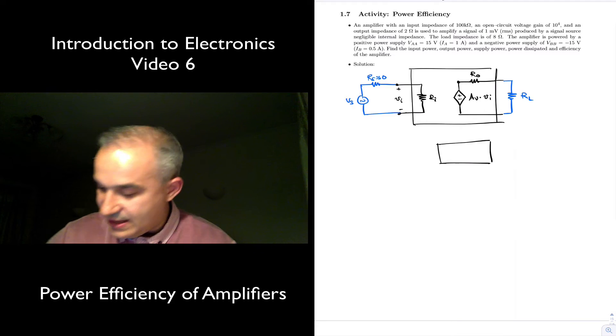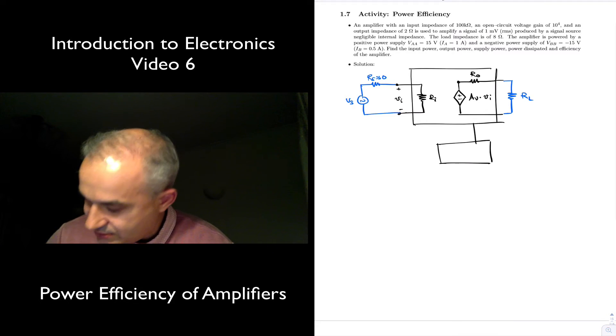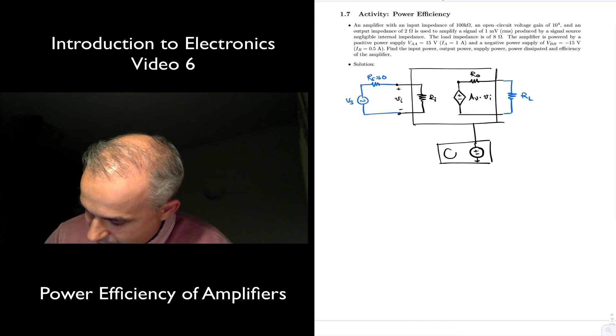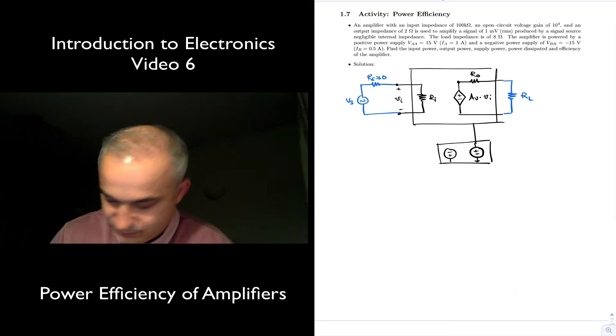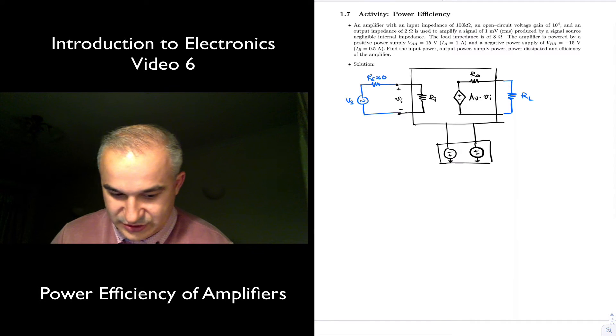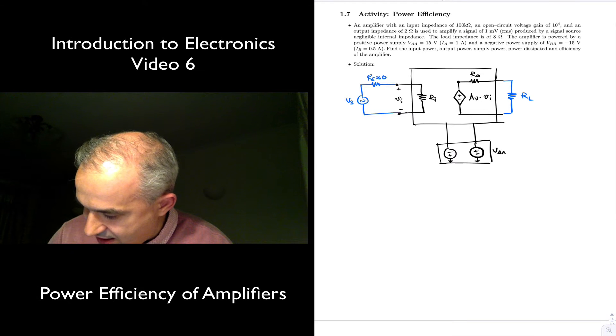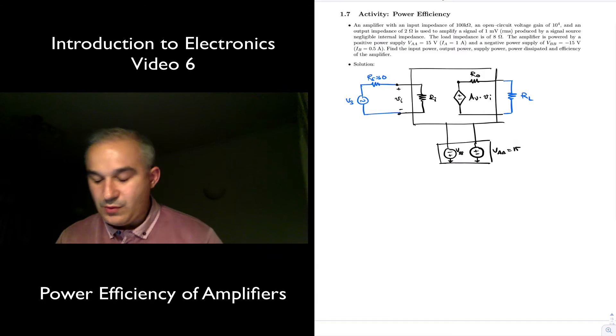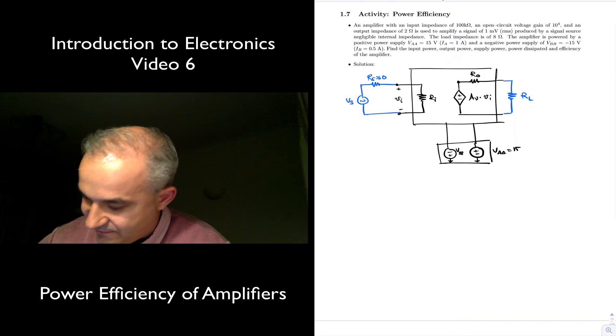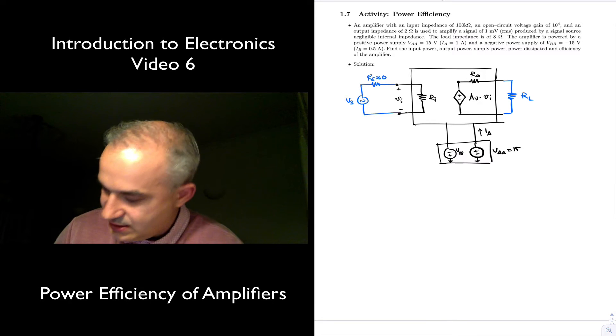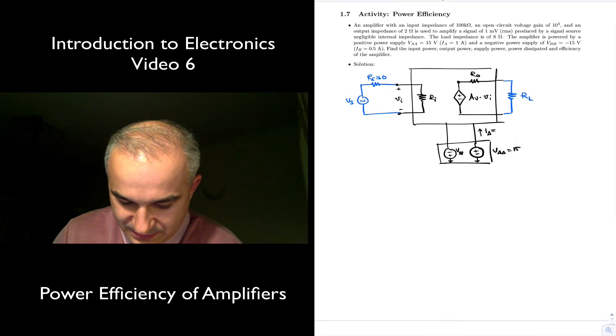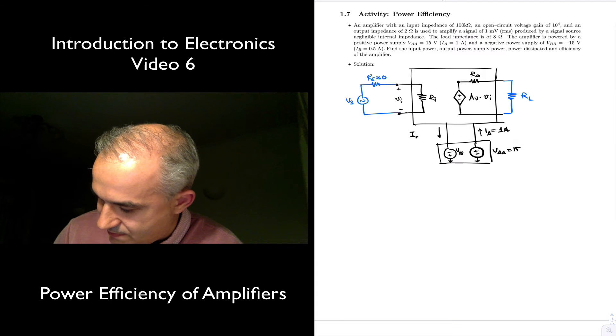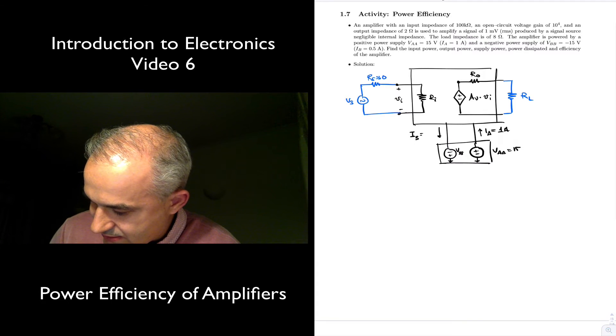This is my power supply, and that power supply is going to supply some current, actually some power. So I'm going to put here a voltage source, I'm going to put here another voltage source. So I would say this is VAA is 15 volts, and this is VBB, which is minus 15 volts. So we have this current, IA equals to 1 amp, and this one, IB 0.5 amps.